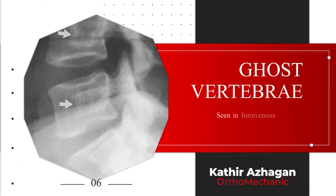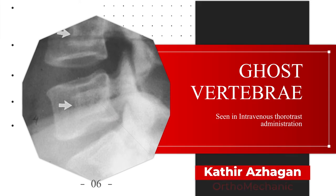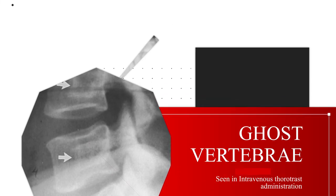Ghost vertebra is a finding after intravenous Thorotrast administration. It is due to radio-opaque densities of infantile vertebrae within the adult vertebral body.